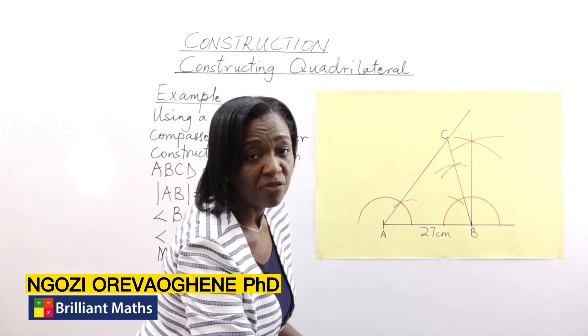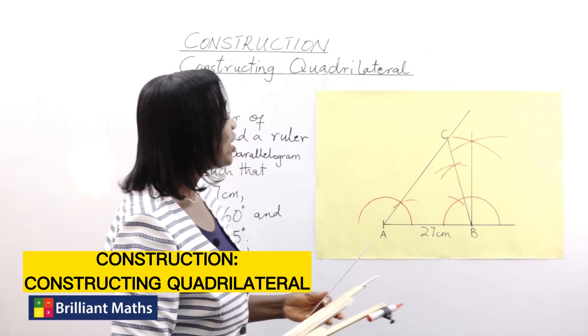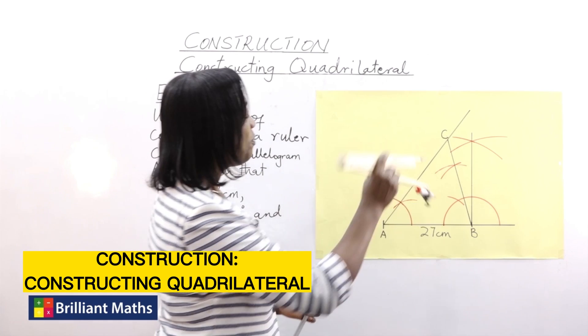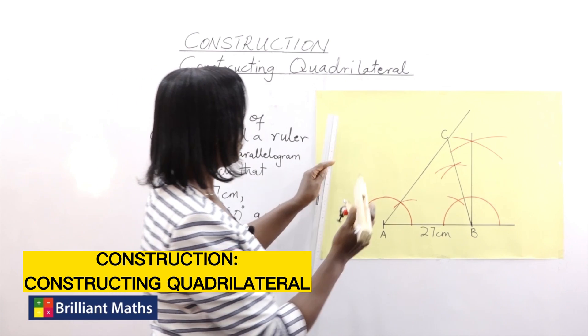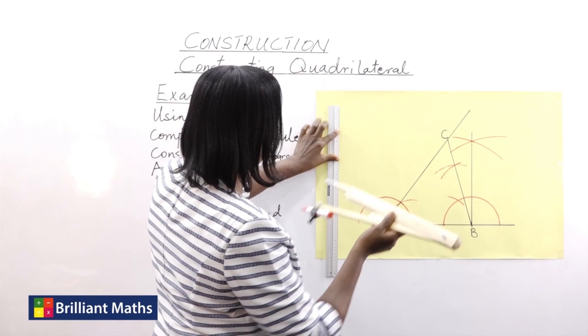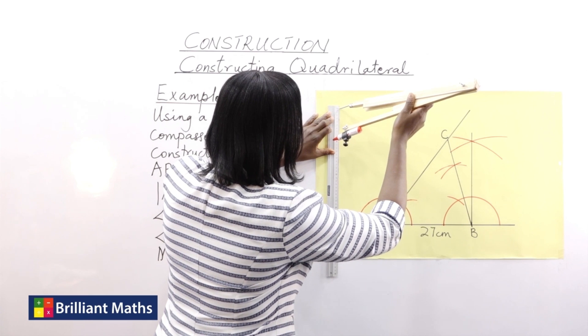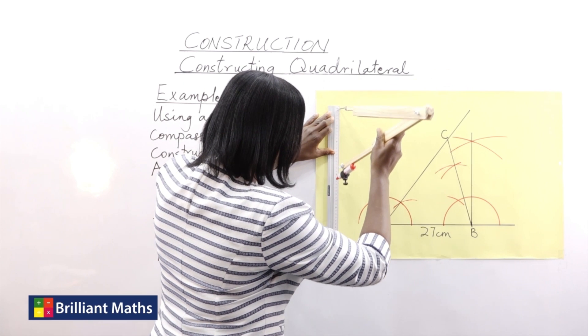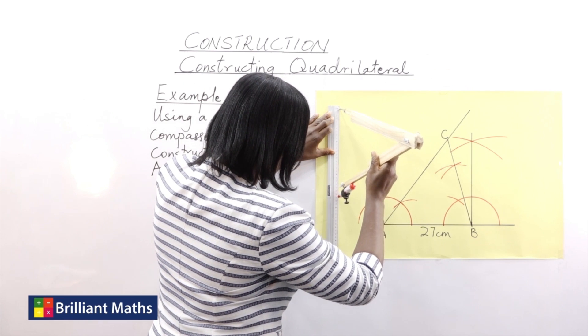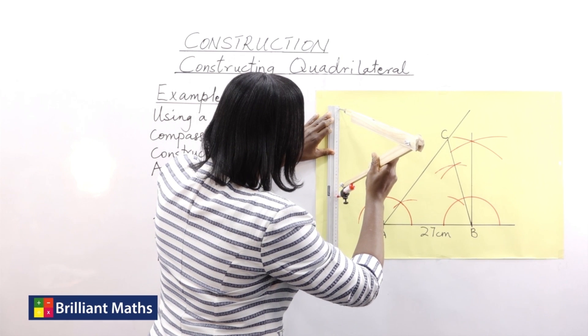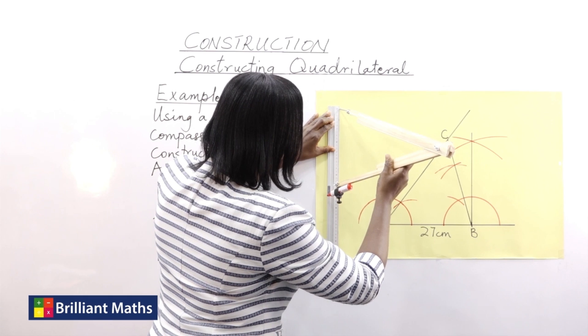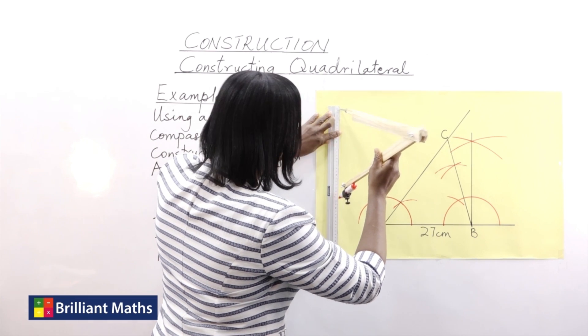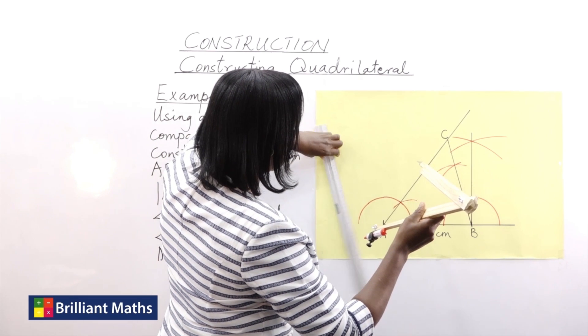So I open up my pair of compasses again to 27 centimeters. Put the point, the pinpoint at C and strike an arc. So 27 centimeters. Accuracy is very important.